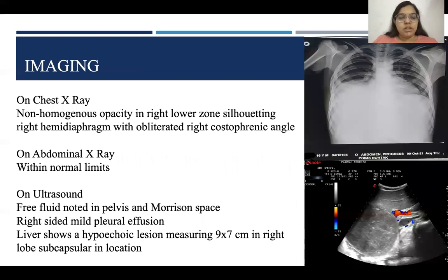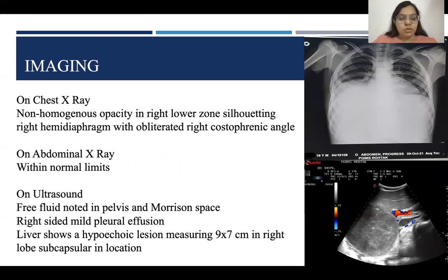On imaging, chest X-ray showed non-homogeneous opacity in the right lower zone abutting the right hemidiaphragm with obliterated right costophrenic angle. Abdominal X-ray was within normal limits. On ultrasound, free fluid was noted in the pelvis and Morison's pouch, and mild right-sided pleural effusion was noted.